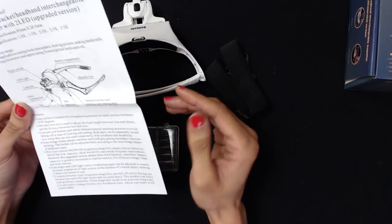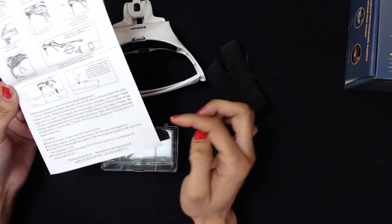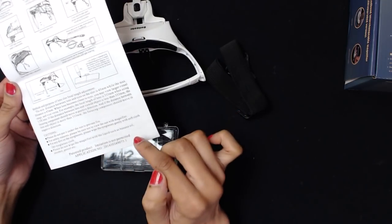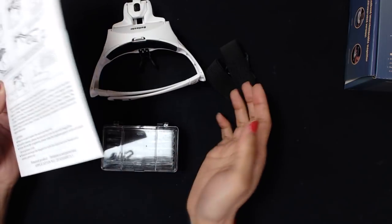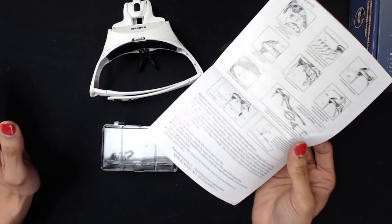And then there was another one that cracked me up. The cautions say please do not wipe the magnifier with liquid such as banana oil. Like why is banana oil the first thing you're gonna go to to clean this thing? I just thought it was really funny.